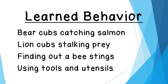Using tools and utensils is another learned behavior. Just like you had to be taught how to use a fork, spoon, knife, pencil, and scissors, animals can also learn to use tools. Primates — particularly orangutans, chimpanzees, and monkeys — use sticks as tools to help them get food. Sometimes otters will take a rock and, by watching other otters, smash it on a shell to get inside.